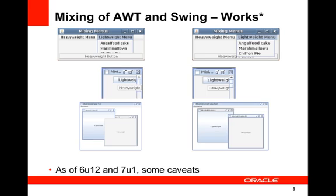In the past, mixing heavyweight and lightweight components in the same GUI caused problems when those components overlapped. For example, a heavyweight menu behaved as expected when selected, but a lightweight menu would be covered by a heavyweight button where they overlapped. This is no longer the case — it works correctly now, having been fixed since Java 6 Update 12 and Java 7 Update 1.